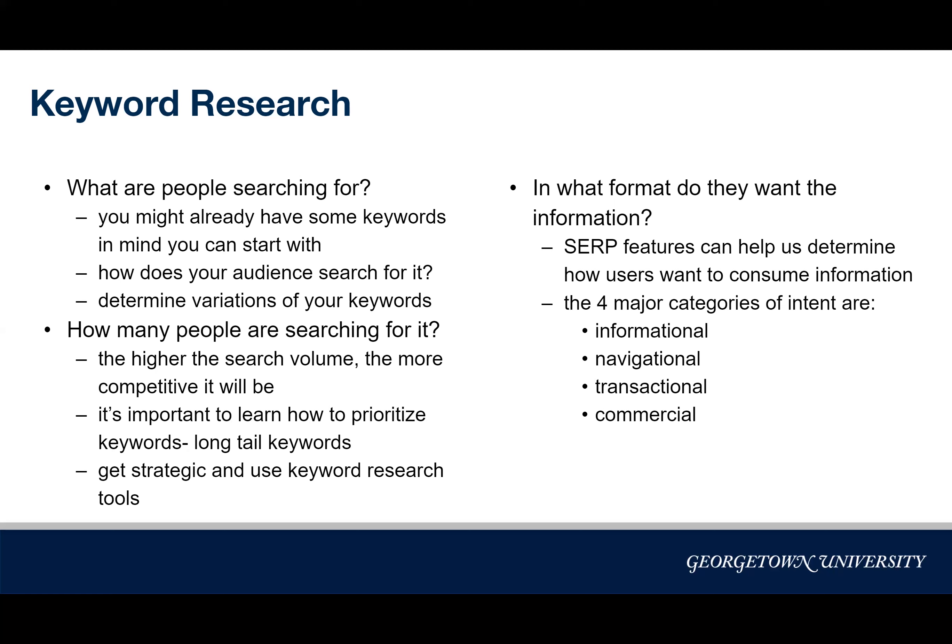Once you have your list of keywords to prioritize, now it's time to think about the format users want their information in. The format users are looking for is going to help us determine the best way to present information on our website and how we can successfully and naturally integrate these keywords into our content. One way to determine popular formats is to look at Google's featured snippets — the content Google puts on the top of the search engine results page. For some searches it can be content in a video format, in paragraphs, or lists.